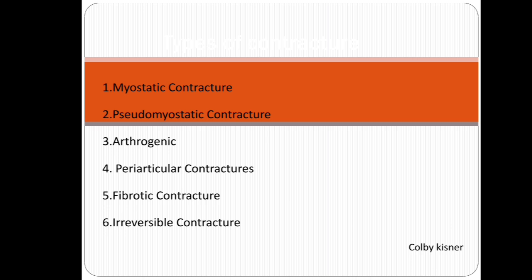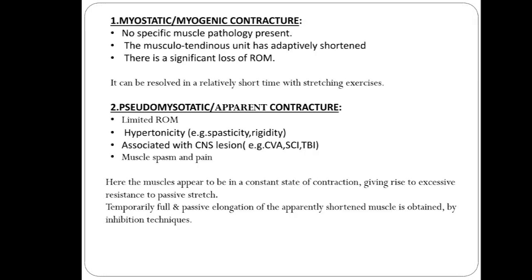Types of contracture include: myostatic contracture, pseudomyostatic contracture, arthrogenic, periarticular, fibrotic, and irreversible contracture. In myostatic contracture, there is no specific pathology but the muscle-tendon unit has shortened with significant loss of range of motion, which can be resolved with stretching. In pseudomyostatic or apparent contracture, there is limited range of motion and hypertonicity associated with CNS involvement, with muscle spasm and pain.